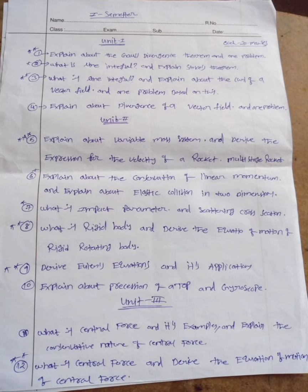What is impact parameter and scattering cross section? What is rigid body and derive the equation of motion of a rigid rotating body? Derive Euler's equations and its applications. Explain about precession of a top and gyroscope.